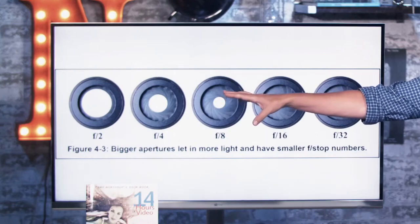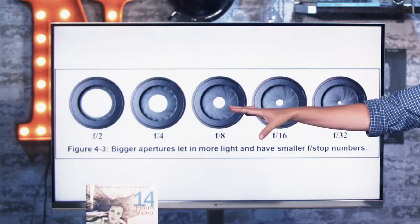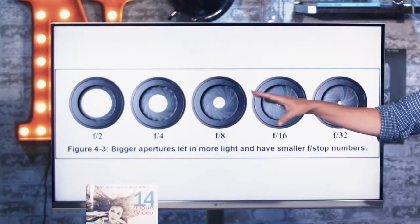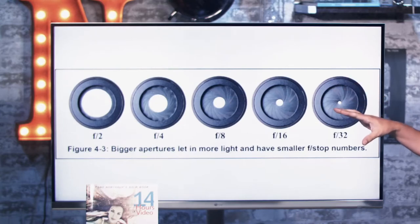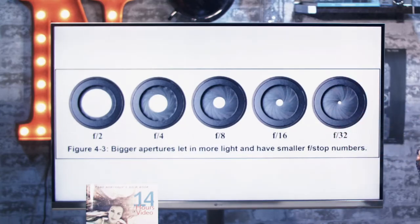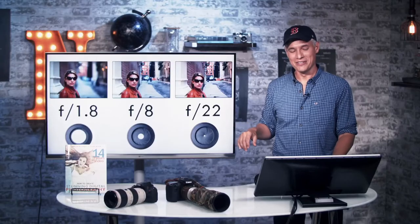Big openings are low f-stop numbers. So f2 is a big opening, f32 is a small opening. You can think of it as a fraction — 1/2 is bigger than 1/32. That's for the math inclined.